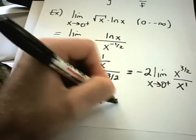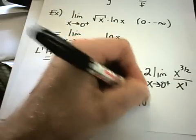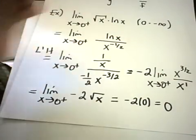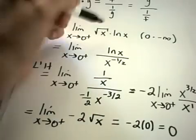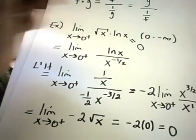And now as x approaches 0 from the right, square root of x is going to approach 0. So you have negative 2 times 0 or 0 as your answer. So the answer to the original problem is just going to be simply equal to 0.